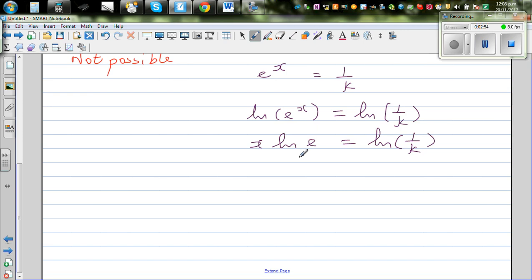And natural log of e has a base of e, so this becomes 1. So we can say x equals natural log of 1 over k. This is the solution of this equation in terms of k.